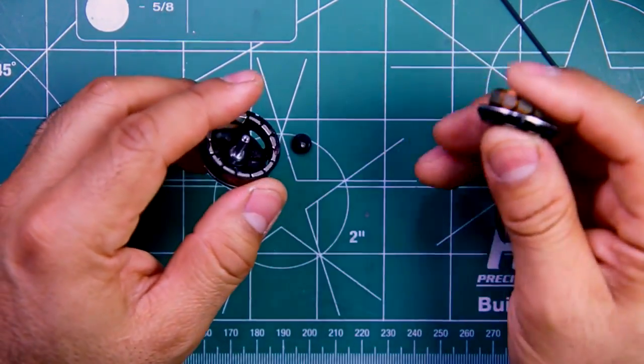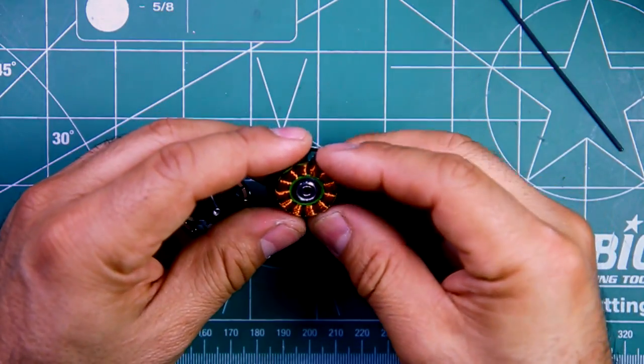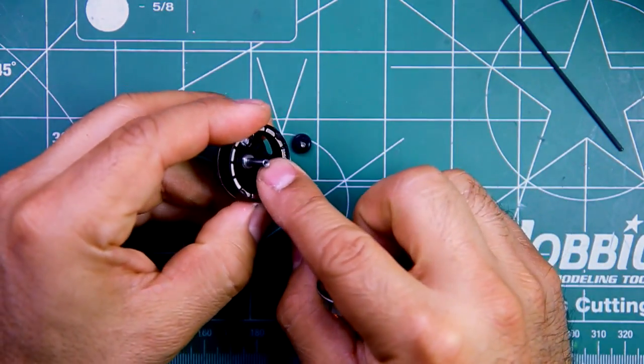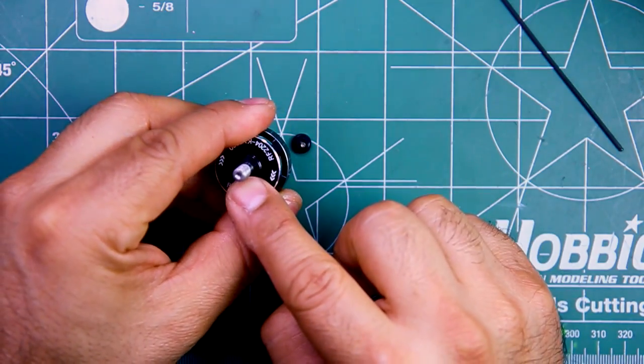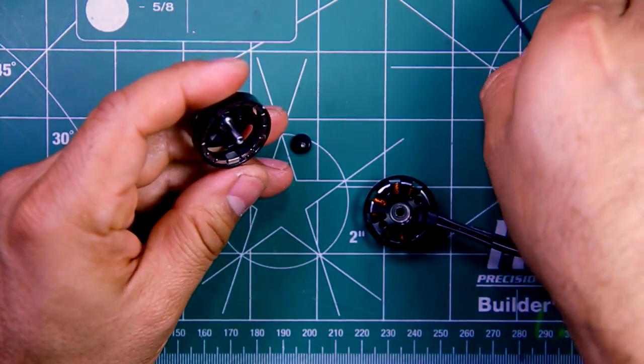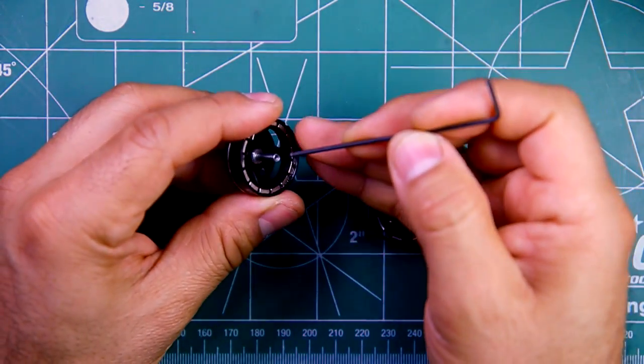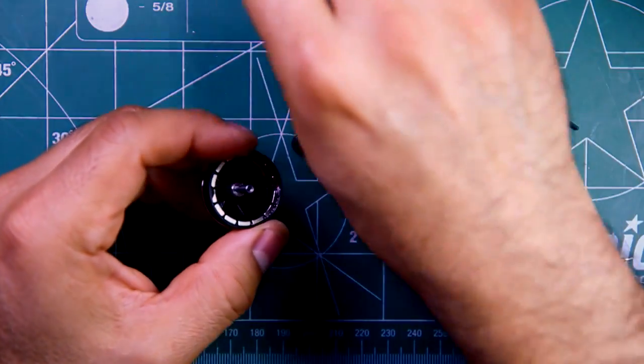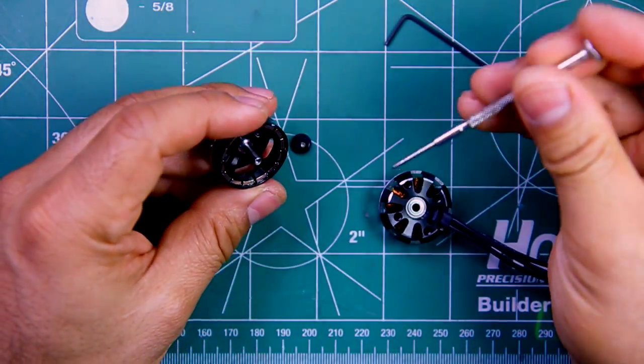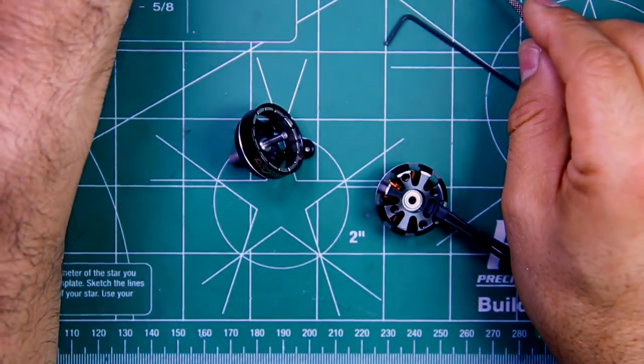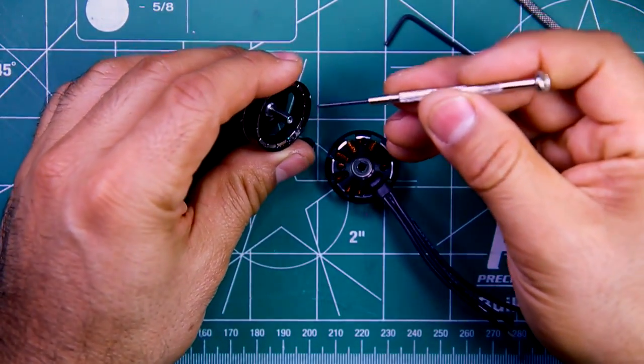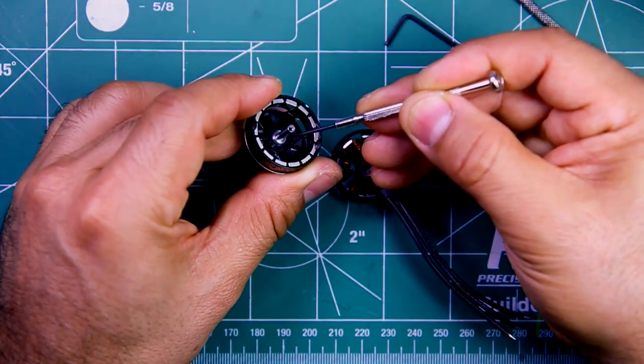You can see the shaft is three millimeters there, and it's five millimeters there. Another thing I can notice is the shaft itself is hollow, all the way up to right there.